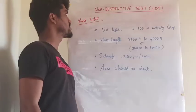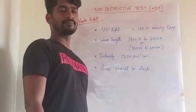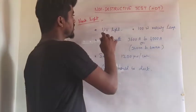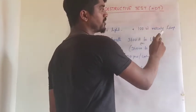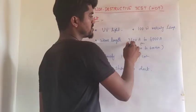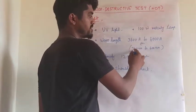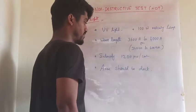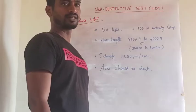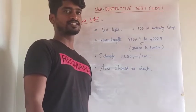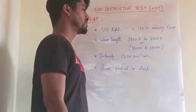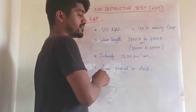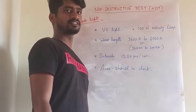Next we are going to see black light. Light plays a major role in finding defects after testing. The required UV light is a 100-watt mercury lamp with a wavelength of 3600Å to 4000Å (360nm to 400nm) and an intensity of 1200 μW/cm². The area should be dark so we can easily find defects. In normal light, we cannot easily find minute defects, so we use black light in a dark room to detect minute-level defects.